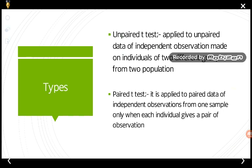Coming to the types: the Student t-test may be of two types. First is the unpaired t-test — from the name itself, it suggests the data are not paired. Second is the paired t-test — from the name itself, it suggests that the observations are paired.